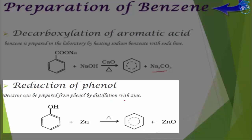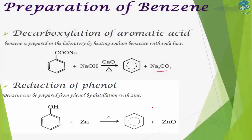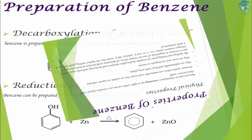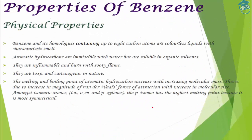The next method is reduction of phenol. Benzene can be prepared from phenol by distilling it with zinc metal. Simply by adding zinc metal and heating at high temperature and pressure, this oxygen is removed and we get a benzene molecule.